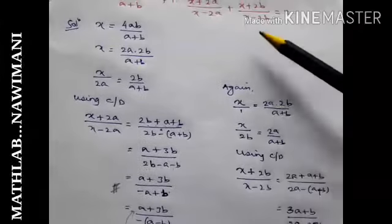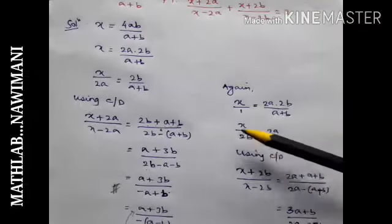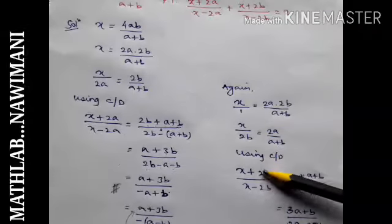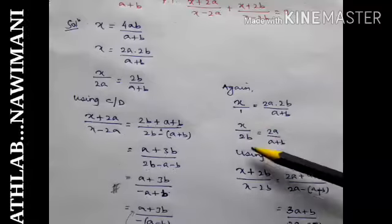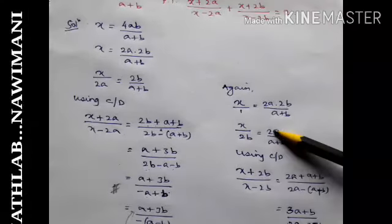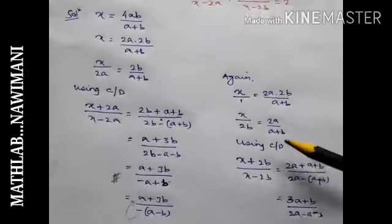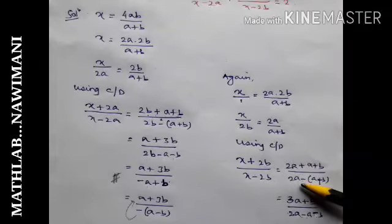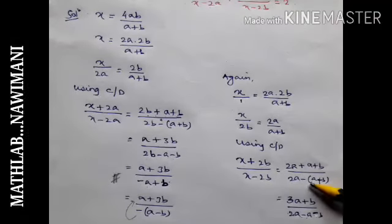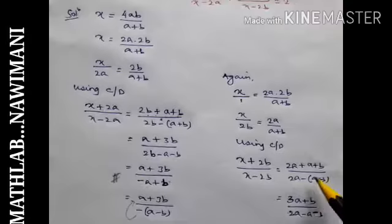So x plus 2b by x minus 2b is equal to, I do the same here, x plus a plus b. 2a minus a plus b, since there is a minus sign, so you have to put bracket.